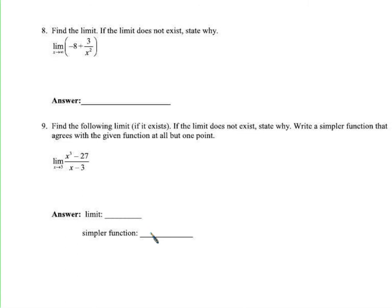Find the limit as x approaches infinity of −8 + 3/x². Nothing happens to the −8 since x doesn't affect it. As x goes to infinity, x² goes to infinity, so 3/x² gets insanely small — really close to 0. Adding something essentially 0 to −8 doesn't change it at all. So the limit is negative 8.